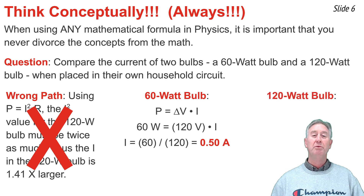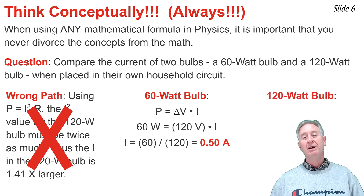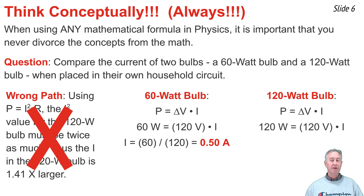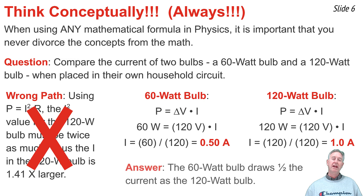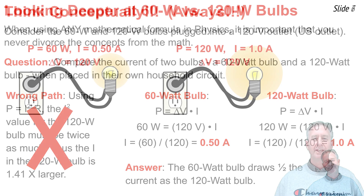Repeating the process for the 120-watt bulb — putting 120 watts in for P and 120 volts in for delta V — I comes out to be 1.0 amps. So the conclusion is that the 60-watt bulb draws one-half the current of the 120-watt bulb.